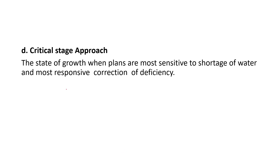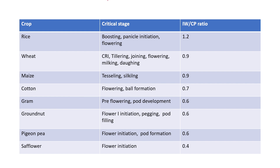The fourth is the critical stage approach. The stage of growth when plants are most sensitive to shortage of water and most responsive to correction of deficiency is called the critical stage. A table is provided showing crops with their critical stages indicating when they need watering.